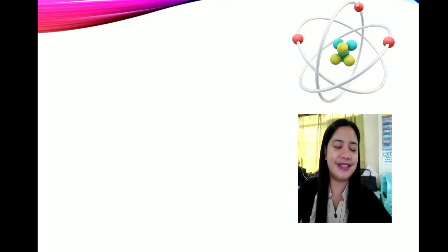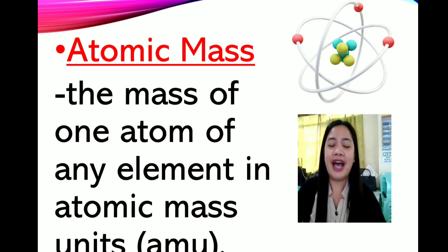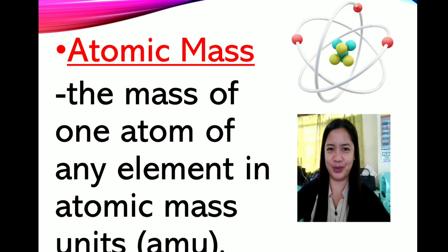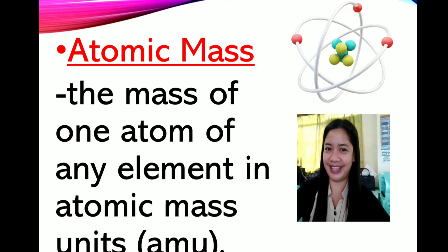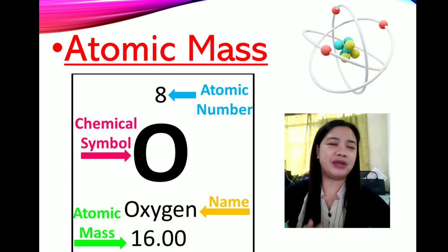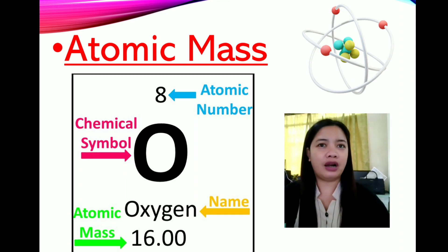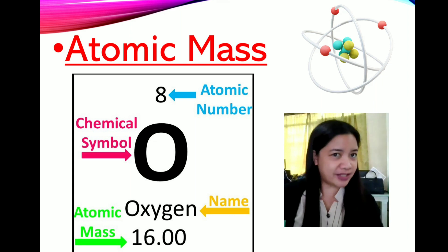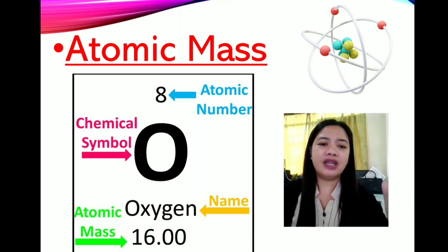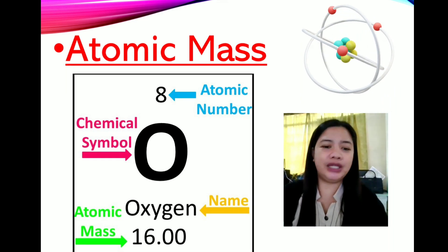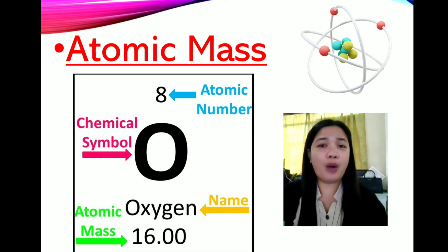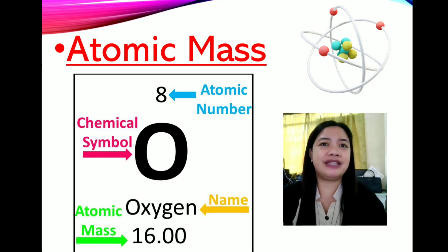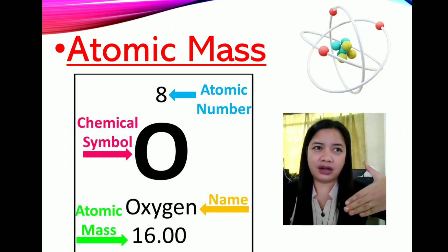Now let's define what is atomic mass. The atomic mass is the mass of one atom of any element in atomic mass units, or AMU. For example, if you have your periodic table with you or a periodic table app on your Android phone, you can find the atomic number, the chemical symbol, the name of that element, and its atomic mass. To identify the atomic mass, most of the time it is located after or under the symbol.